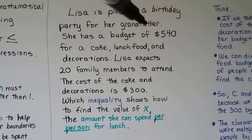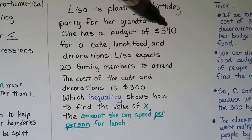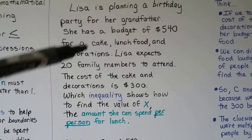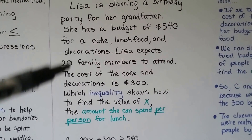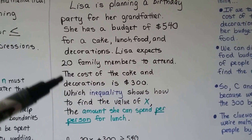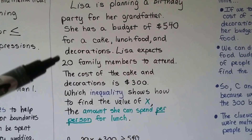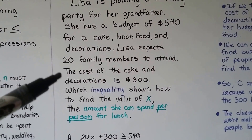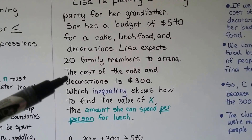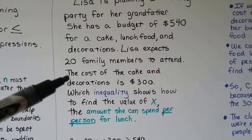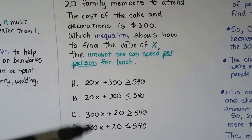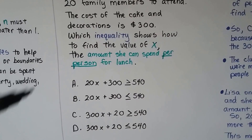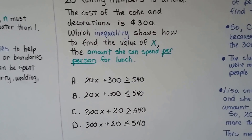She's got a budget of $540 — that means that's all she's got. She has to get a cake, lunch food, and decorations. There are 20 family members she expects to come and she needs to feed them, and the cost of the cake and decorations is $300. We have to figure out which answer would help her find how much she can spend per person for lunch.